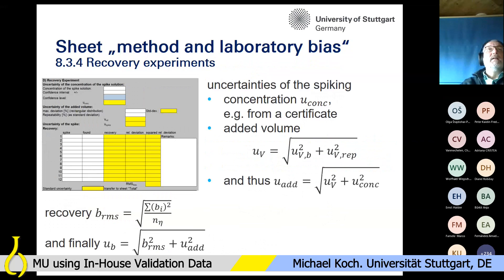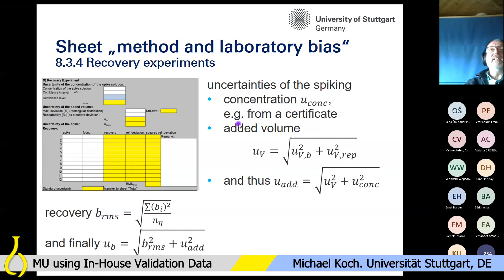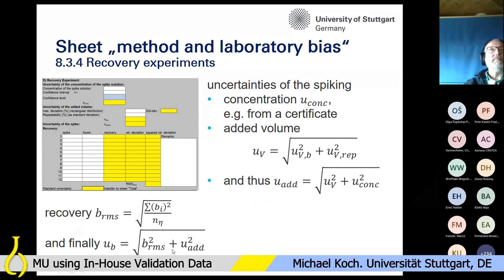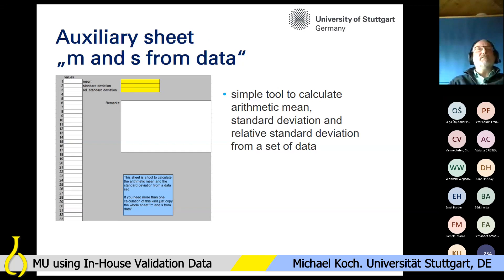For recovery experiments, we have the uncertainties of the spiking, which is equivalent to the uncertainty of the reference value because the spiking is the reference in this case. It handles the uncertainty of the concentration of the spiking solution and the uncertainty of the added volume, exactly using the formula from the ISO standard. The recovery bias is again calculated as the root mean of squares, and finally these two components — the uncertainties of the spiking and the average bias — are combined.